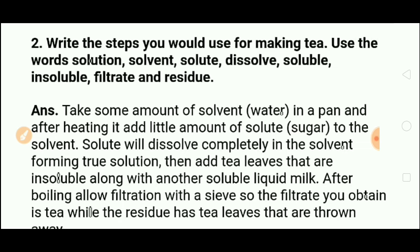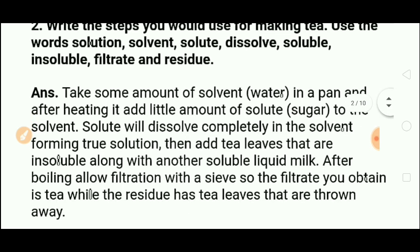Then we add tea leaves, which are insoluble. Next we add milk, which is a soluble liquid. Then we boil the mixture. After boiling, we filter it — the tea leaves present are separated as residue, and the liquid that passes through is the filtrate, which is our prepared tea.